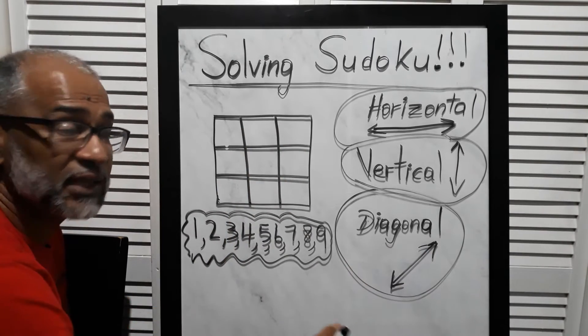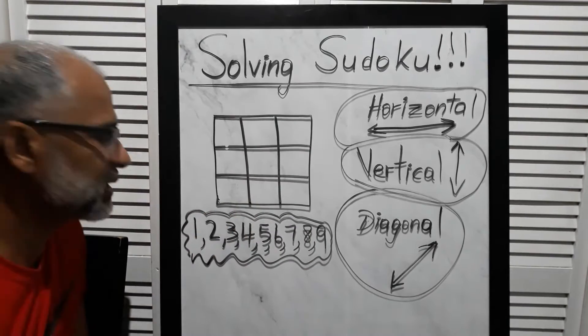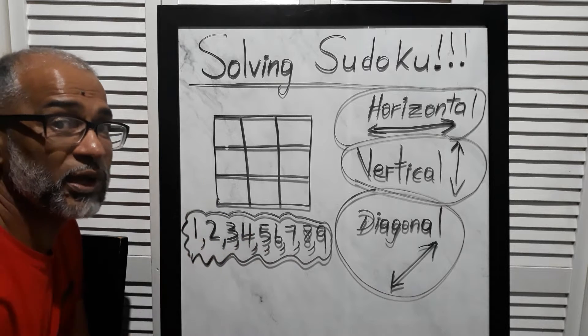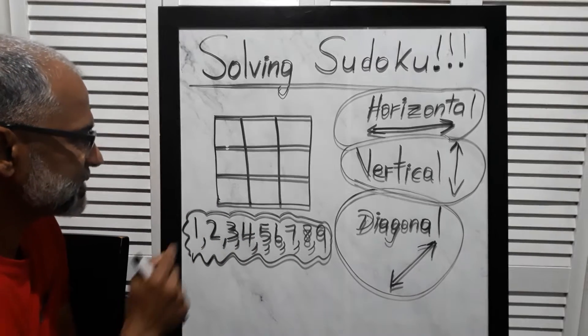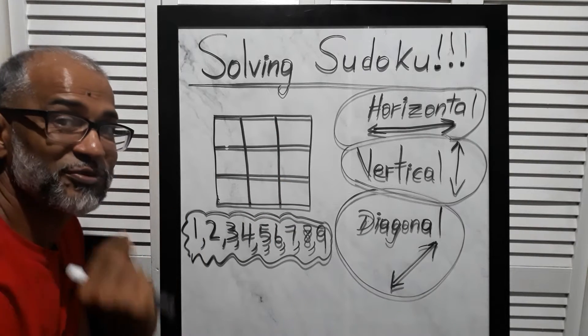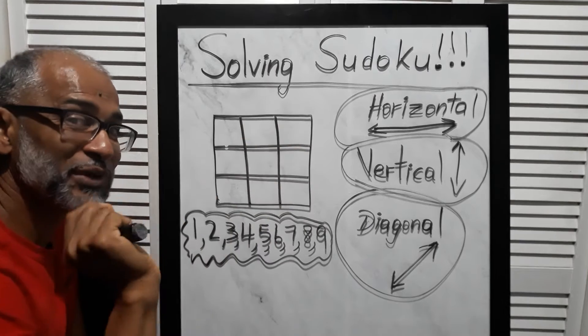Also diagonal—a slanted line—yes, equals 15 here also. But here's the key: you cannot use these nine numbers more than once. So for example, if you use one here, you can't use one again. Some of you wise guys probably want to put five here, five here, five here—no, you can't do it.